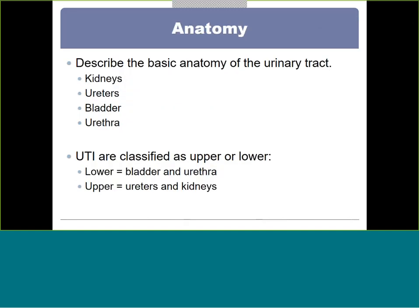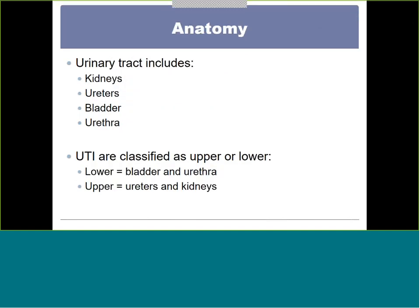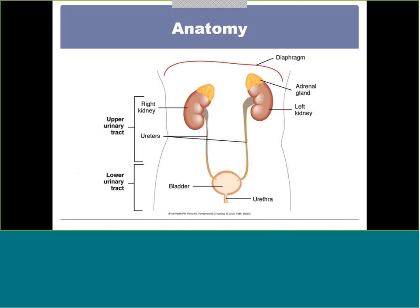We'll skip through objectives. The urinary tract includes the kidneys, the ureters, the bladder, and the urethra. There are two different types of urinary tract infections, UTIs: a lower UTI, which involves the bladder and urethra, or an upper UTI, which involves the ureters and kidneys. There's a picture showing where we separate the upper from the lower.